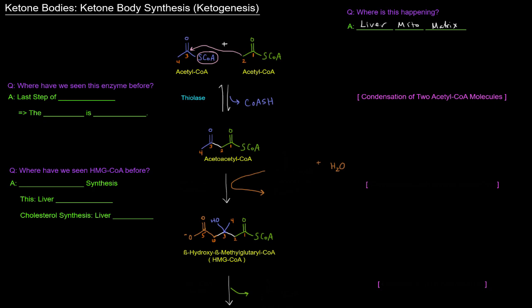And this specific step is catalyzed by an enzyme called thiolase, which we've actually seen before. Where have we seen this enzyme before? We've seen it in the last step of beta-oxidation, which is a process we mentioned in the previous video. The last step of beta-oxidation was a cleavage reaction, cleaving off an acetyl-CoA is catalyzed by a thiolase. So this is that same enzyme. And what we can see here is a double arrow is that the cleavage reaction is reversible.